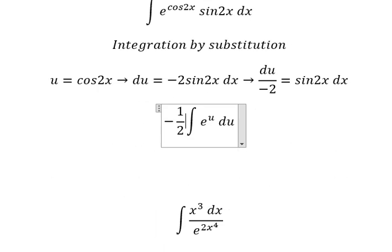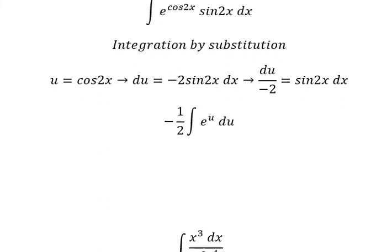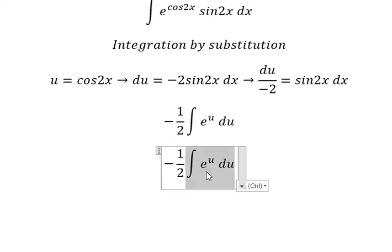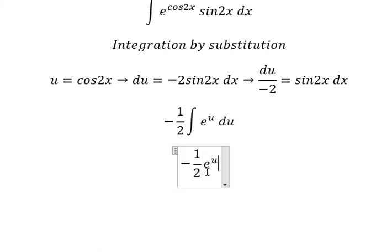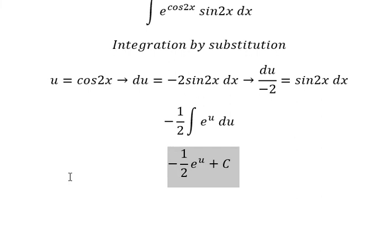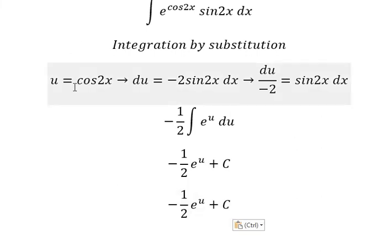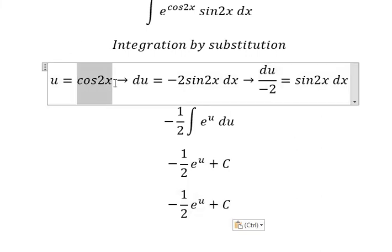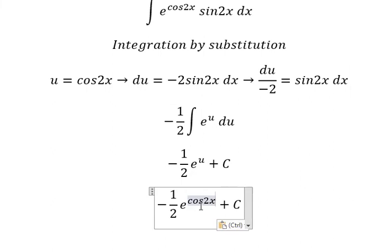The integration of this one gives e to the power of u, and we put the constant c. Substituting back, u is cosine 2x, and this is the final answer.